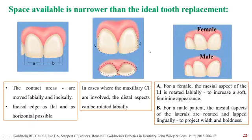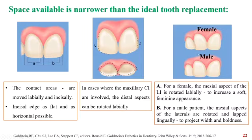When the space available is narrower than the ideal tooth replacement, the contact area can be moved more labially and incisally, and the incisal edge can be made as flat and horizontal as possible. When the maxillary central incisors are involved, we can rotate the distal aspects more labially to give a bold and characteristic appearance. In the case of a lateral incisor, for a female patient, the mesial aspect can be rotated labially to give a soft feminine appearance, whereas for a male, it can be rotated lingually to give an appearance of width and boldness.